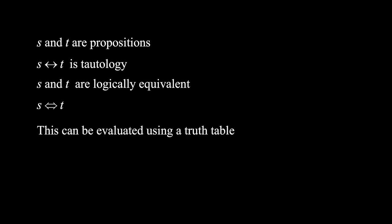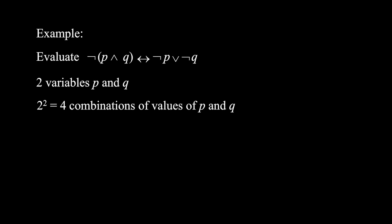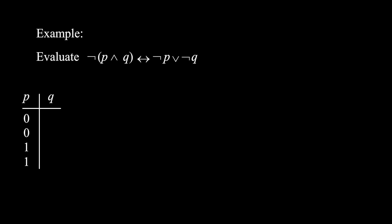This can be evaluated using a truth table. For example, evaluate not (p and q) if and only if not p or not q. The truth table is as follows. There are two variables, so there are 2 to the power 2, that is 4 combinations of values of p and q. They are put in the table systematically in the first and second columns, like this.